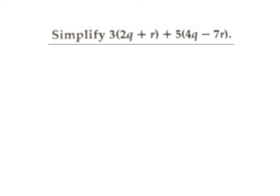When we simplify an algebraic expression using order of operations, we're also using those properties of real numbers. In this example, we have 3 times the quantity (2q + r) plus 5 times the quantity (4q − 7r). A number being multiplied by a sum in parentheses indicates the distributive property. So we take the 3 and distribute it inside: 3 times 2q is 6q, and 3 times r is 3r.